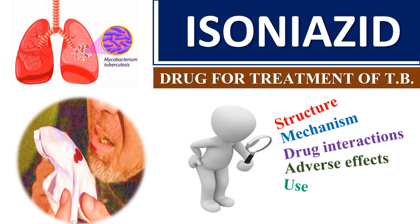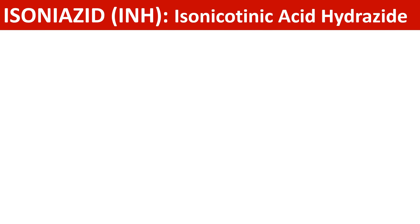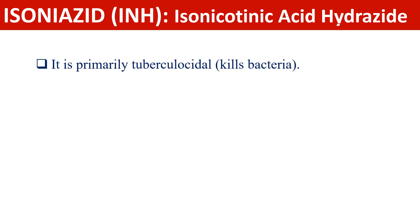Let us cover some important points regarding isoniazid, a drug used for the treatment of tuberculosis. Isoniazid, in short, is also termed as INH, the full form of which is isonicotinic acid hydrazide. Isoniazid is primarily tuberculocidal, meaning it kills bacteria.